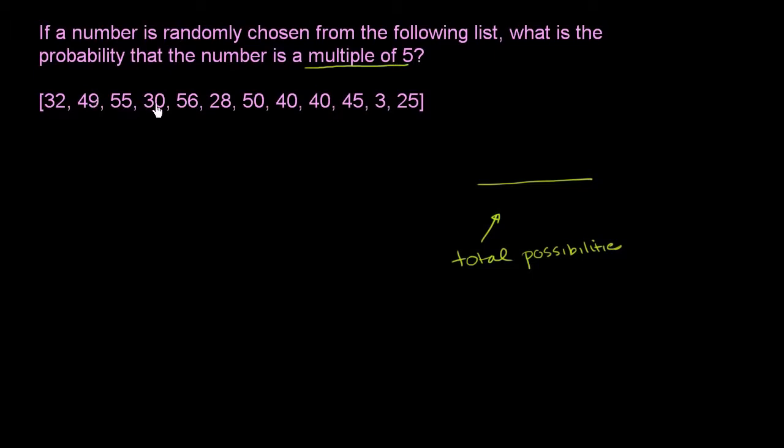So 1, 2, 3, 4, 5, 6, 7, 8, 9, 10, 11, 12. So there are 12 possibilities. We have an equal chance of picking any one of these 12.